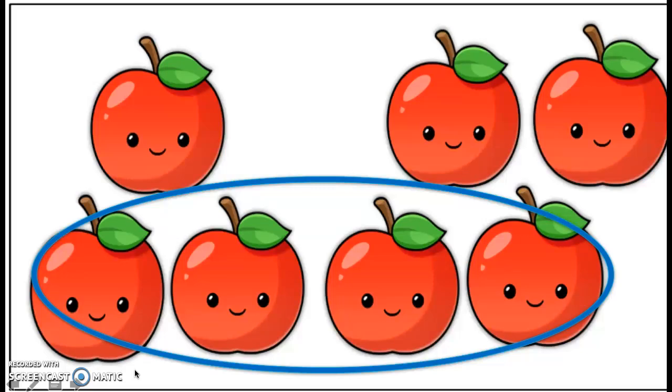One, two, three, four. So my first part is going to be four. What's my other part? How many apples did I not circle? Can you count for me? Good job. One, two, three. So I have four as one part and three as the other part.